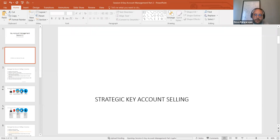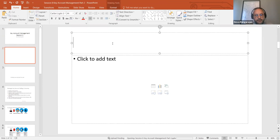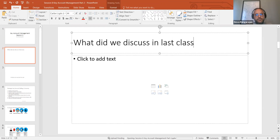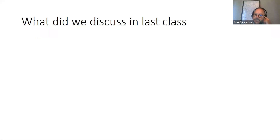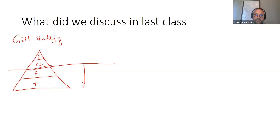We're talking about key account management and what we looked at in the last class. We discussed the go-to-market strategy, which is designed by your different kinds of sales processes. We talked about transactional customers, functional customers, consultative customers, and enterprise customers. For transactional and functional customers, our job is to try and reduce the cost of sale.